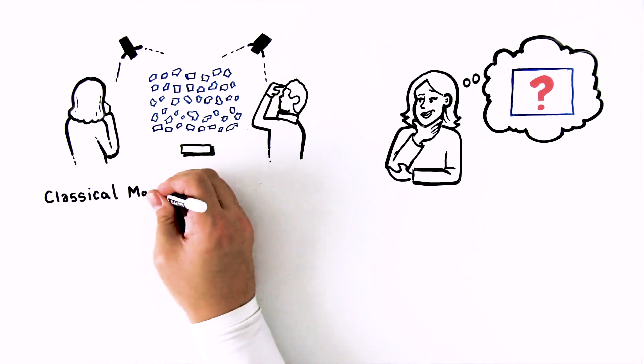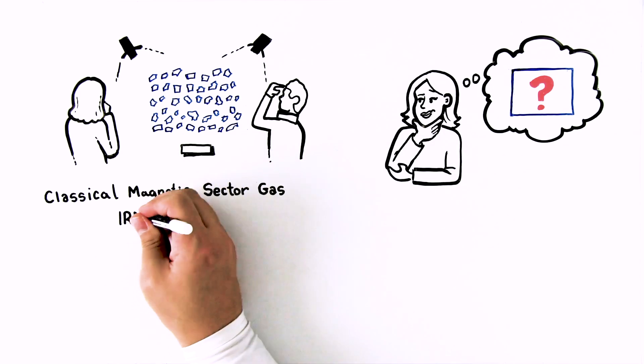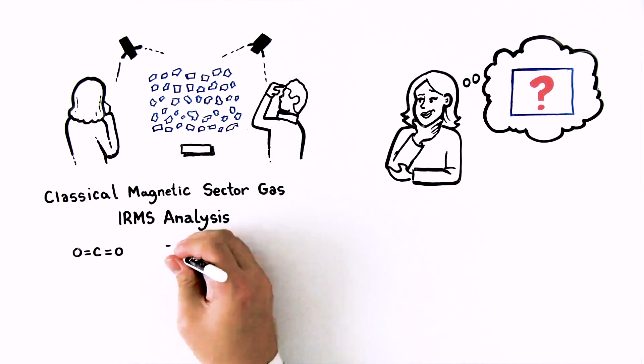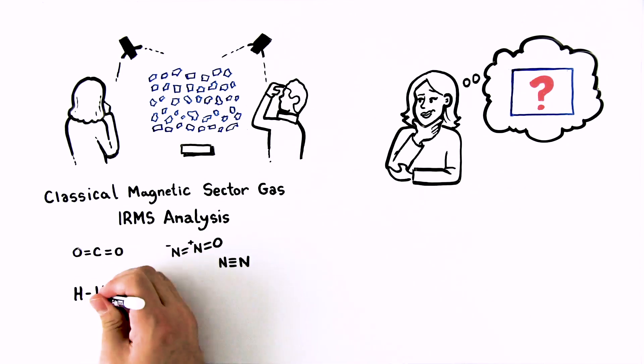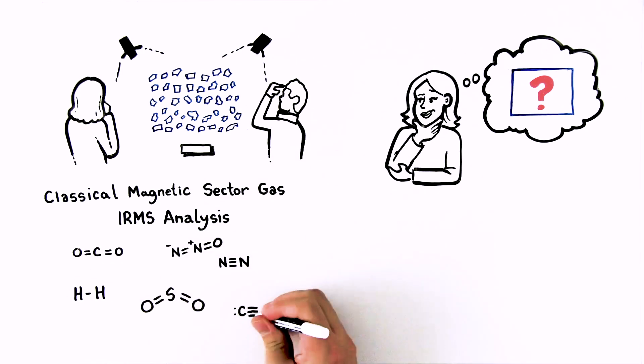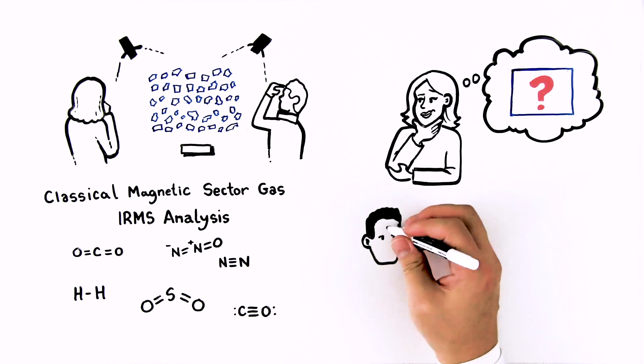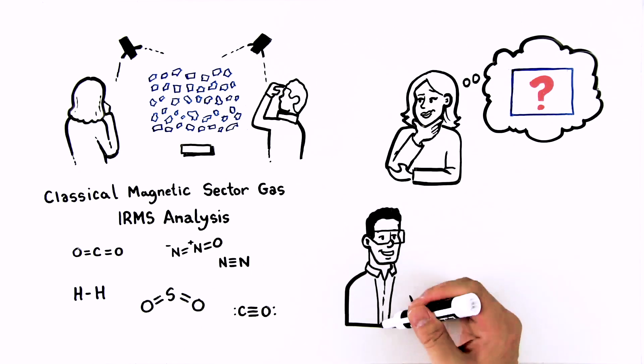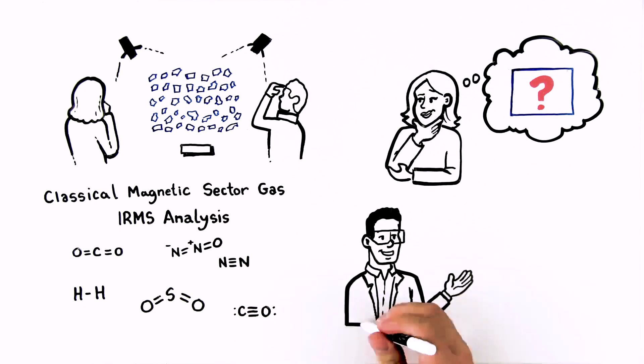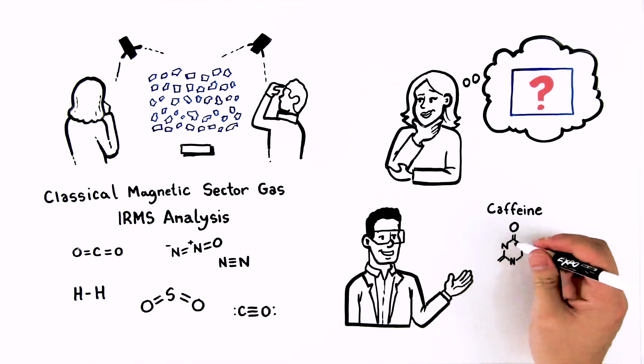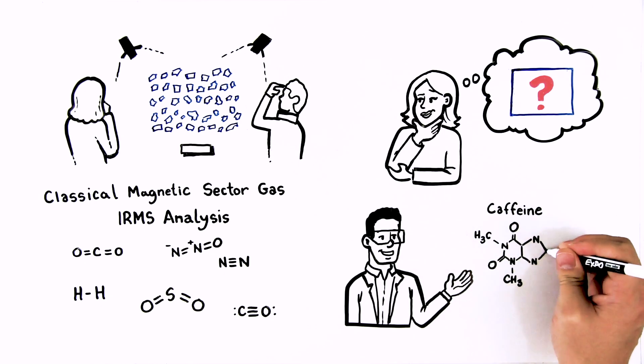Similarly, when performing classical magnetic sector gas IRMS analysis, your sample is converted to a simple gas and information is lost along the way. Wouldn't it be incredible if you could look at the whole picture and analyze isotopes in complex molecules such as caffeine directly from the intact molecular ions?